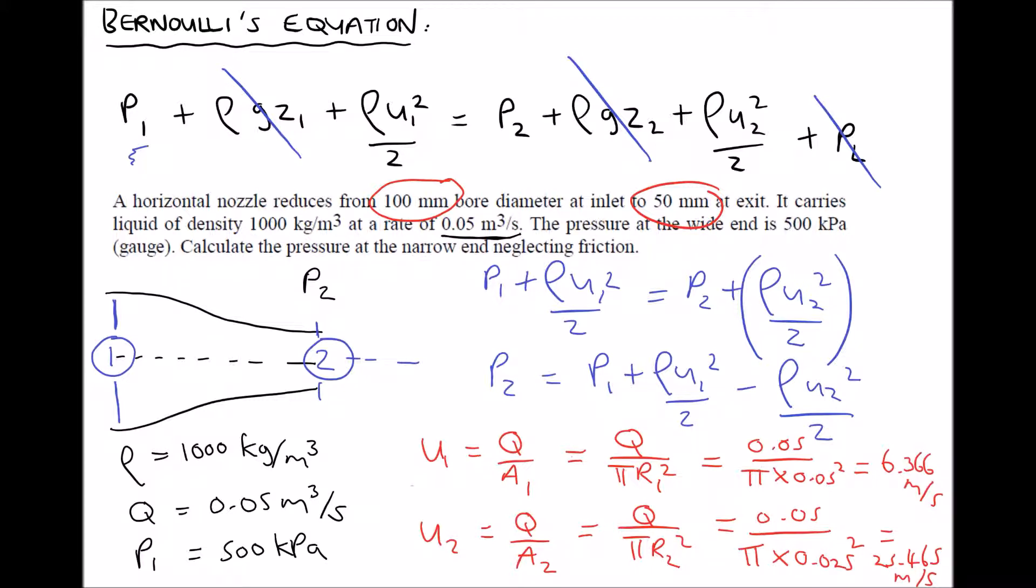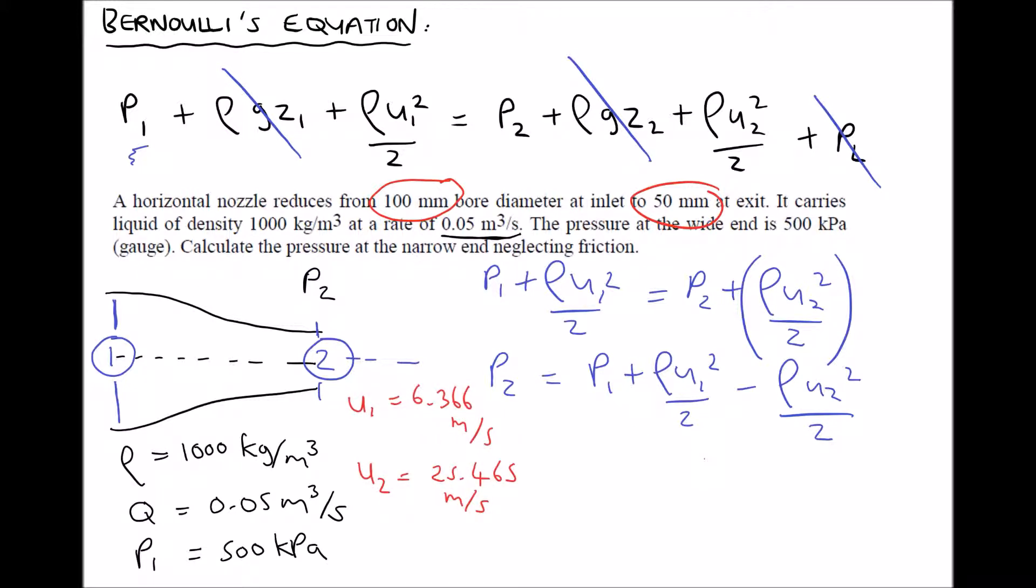I'm going to transfer the values of u₁ and u₂ into the bottom left-hand corner. And then we can calculate the pressure at position 2 using Bernoulli's equation. So to finish, we have P₂ = P₁. P₁ is given as 500 kilopascals or 500,000 pascals.